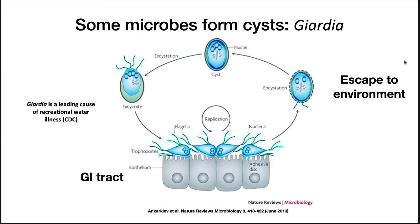Giardia is one example of the seed approach. This protozoan is a leading cause of recreational water illness. It grows in the gastrointestinal tract, causing discomfort and diarrhea. As it leaves the intestines, it will sense starvation and encase itself in a cyst. This cyst has a hard outer layer that protects it from the environment and it also turns down its metabolism until it is ingested by the next host. It then emerges from the cyst and begins growing again.